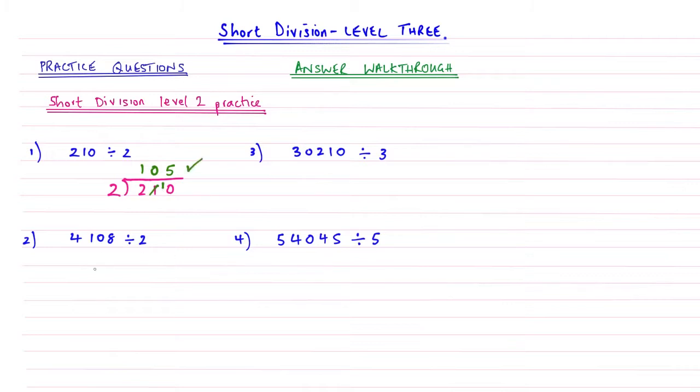Practice question number 2: our line and our curly brace, then 4, 1, 0, 8 underneath, again making sure to leave our gaps for our carrying. 2's into 4: it goes in twice.